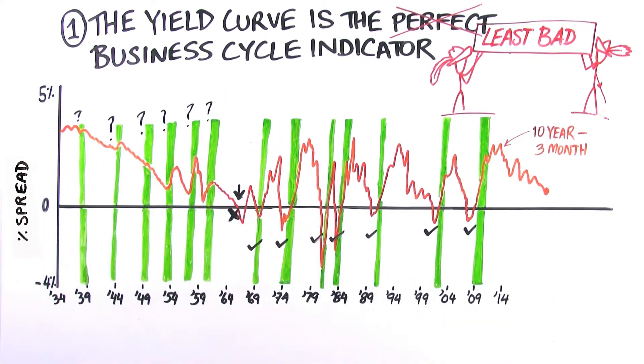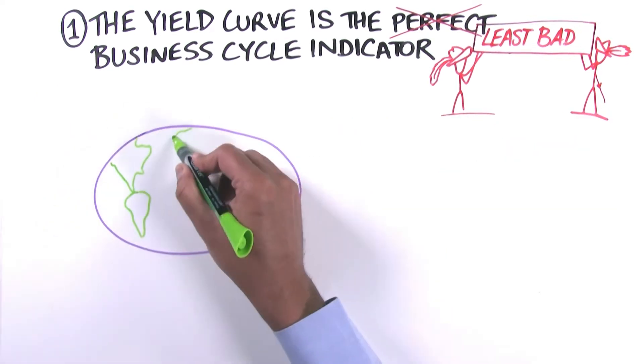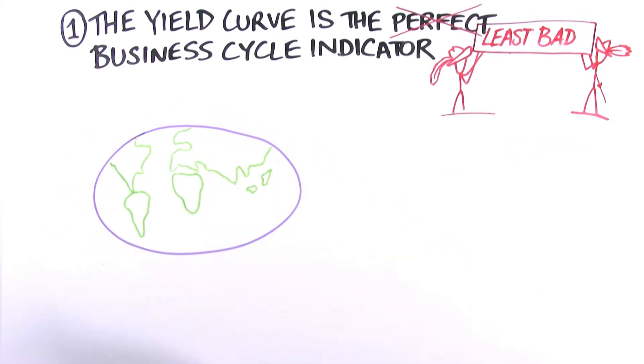There are a number of false negatives. And globally, yield curves are less useful. For example, in Australia, we've seen yield curve invert three times in the past 27 years without an official recession following.